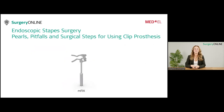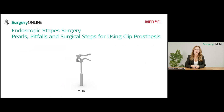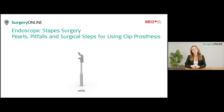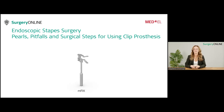The prosthesis we will see today is the MFIX stapes prosthesis from Medel — a stapes prosthesis with a self-retaining clip that does not need manual crimping or a laser. It can simply be pushed over the long process of the incus and will stay in place. It is available in functional lengths from 3.5 mm to 5.5 mm and piston diameters between 0.4 and 0.6 mm.